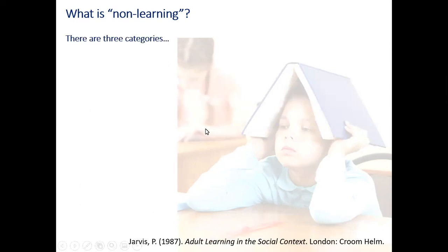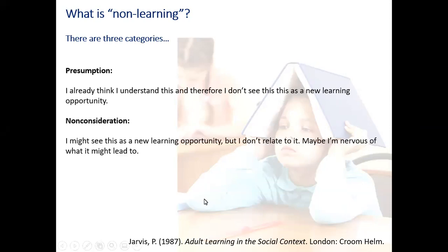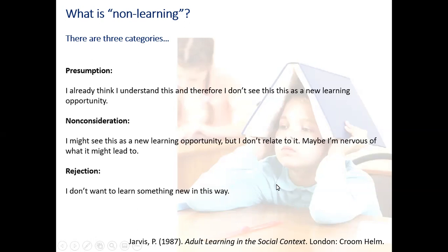There are three categories of non-learning. First of all, there is presumption — I already think I understand this and therefore I don't see this as a learning opportunity. I want you to think, before I show you the next two, think of your students, think of any of your classes, and I would like you to think if you recognize any of these in-class situations. Non-consideration: I might see this as a new learning opportunity, but I don't relate to it. Maybe I'm nervous of it or what it might lead to. And last but not least, rejection: I don't want to learn something new in this way.